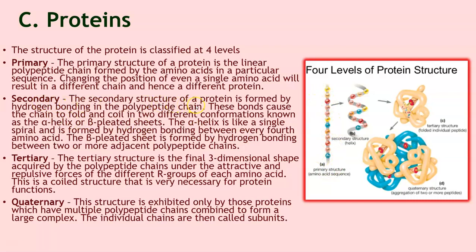Secondary: the secondary structure of a protein is formed by hydrogen bonding in the polypeptide chains. These bonds cause the chain to fold and coil into different conformations known as the alpha helix and the beta pleated sheets. The alpha helix is like a single spiral, formed by hydrogen bonding between every fourth amino acid. The beta pleated sheet is formed by hydrogen bonding between two or more adjacent polypeptide chains.